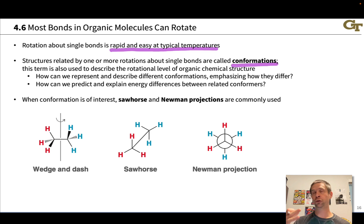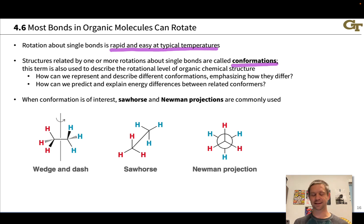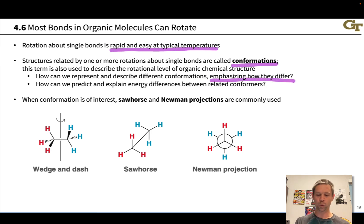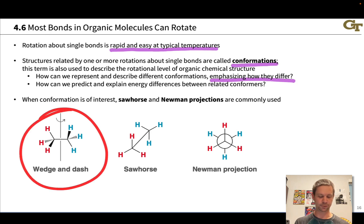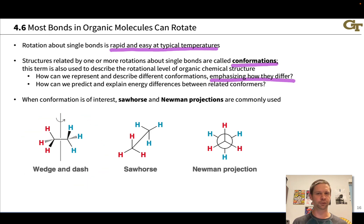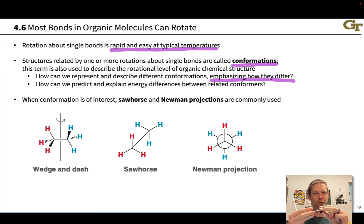In order to represent and think about and describe that dependence of energy on the rotational state of a molecule, we need to know how we can represent and describe different conformations. Of course, we could do this using wedge and dash structures, and this is sometimes done. But this is a little bit cumbersome because rotation is a bit difficult to detect in a wedge-dash structure.